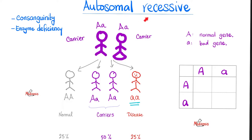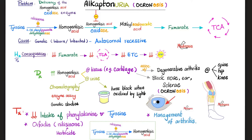Alkaptonuria is an autosomal recessive disease. When you hear autosomal recessive, remember two things: number one, consanguinity is likely — people who marry their relatives in a tight-knit community. And number two, many autosomal recessive diseases are caused by an enzyme deficiency. The enzyme deficient in alkaptonuria is homogentisic acid oxidase — a genetic, inborn, inherited deficiency.